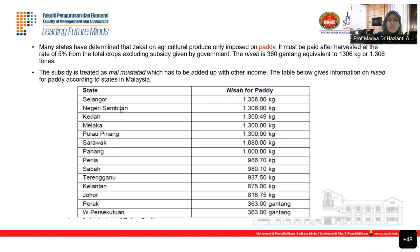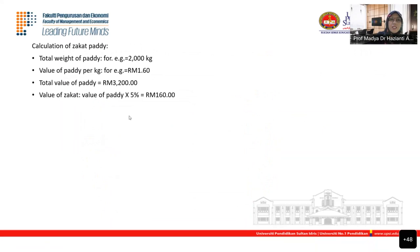Different states apply different nisab amounts. Selangor's nisab is 1,306 kg; Negeri Sembilan and Johor is 1,507 kg; Kedah is 1,013 kg; Penang is 1,003 kg; Sarawak and Pahang have lower figures. For the livestock example: zakat is compulsory when the owner fulfills conditions based on hadith — from 40 sheep, 1 sheep is given as zakat. For cows and buffalo, nisab is 30; goats and sheep, 40; camels, 5. The haul is one year. In Malaysia, payment is in cash equivalent to the value of livestock, not in kind.